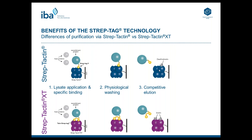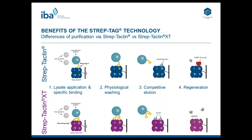The regeneration on Streptactin can be done with HABA. HABA is a yellowish solution which is applied onto the column, and when it binds to Streptactin it changes its color from yellow to red, thereby releasing desthiobiotin from the resin. This color change also serves as a quality control — as long as HABA turns red on the column, you can still reuse your column. The regeneration on Streptactin XT is done with low concentrations of sodium hydroxide. HABA can be used as a quality control for Streptactin XT as well, but it will not lead to regeneration of the Streptactin XT resin.